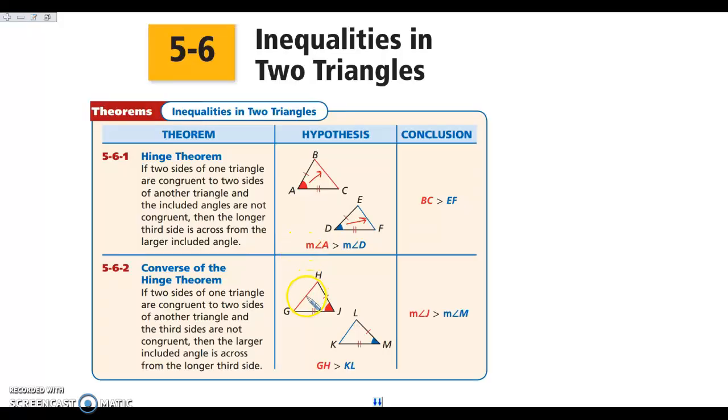And the reverse is also true. If I know that this side is bigger than this one, then this angle across from it is going to be bigger than this angle. So that is your hinge theorem and your converse. Again, make sure you know that the two sides here have to be congruent in order for this to work.